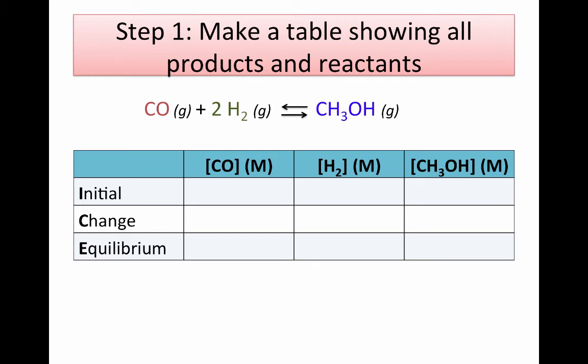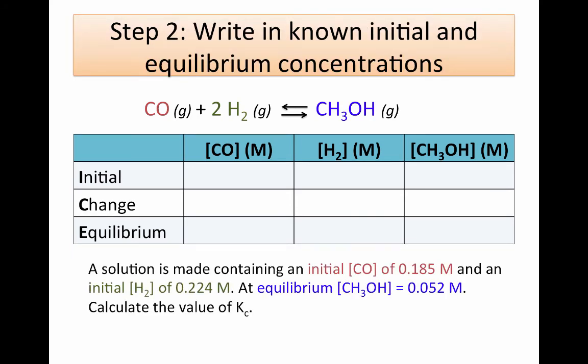First we make our ICE table with three rows and columns for our two reactants — carbon monoxide and hydrogen gas — and our product, methanol. Then in step two we write in the concentrations we know. We're given three concentrations from the problem. Once again, we don't have an initial concentration for our product, but since we didn't add any to start, that must be zero.